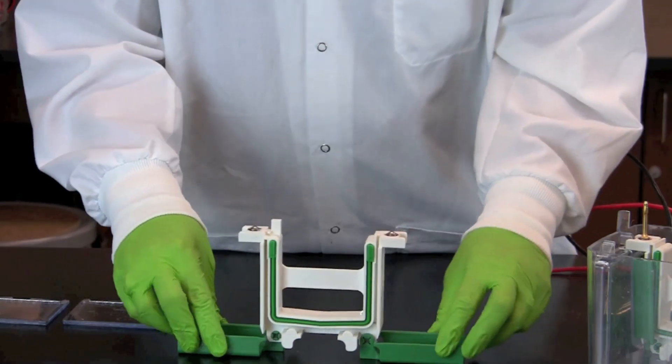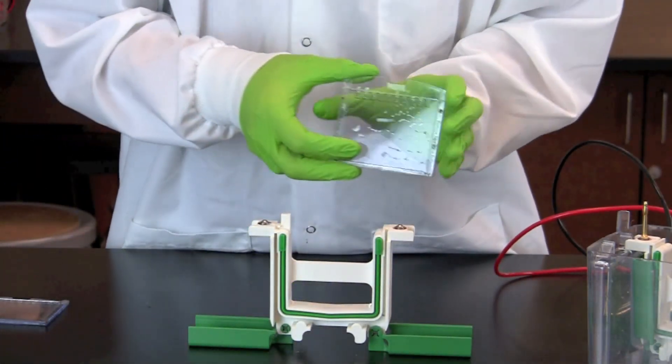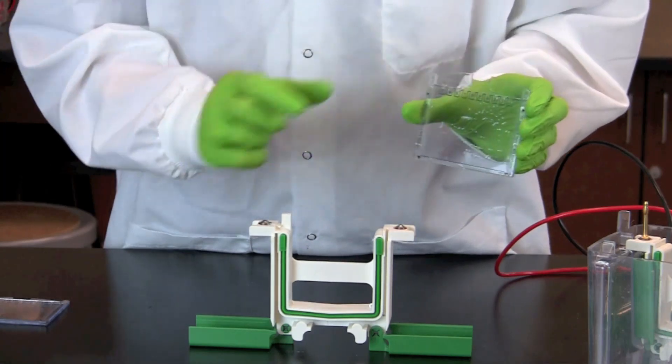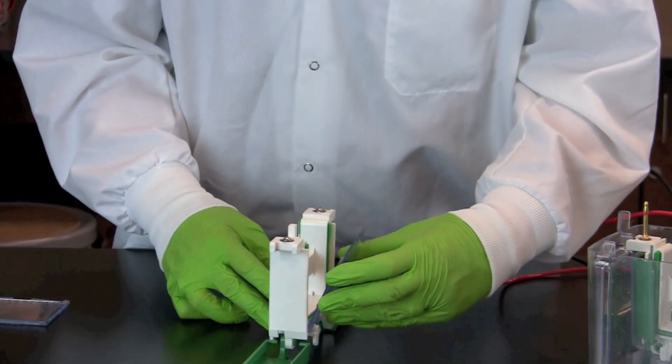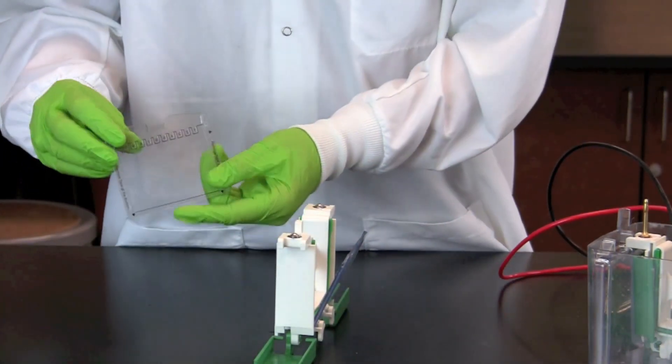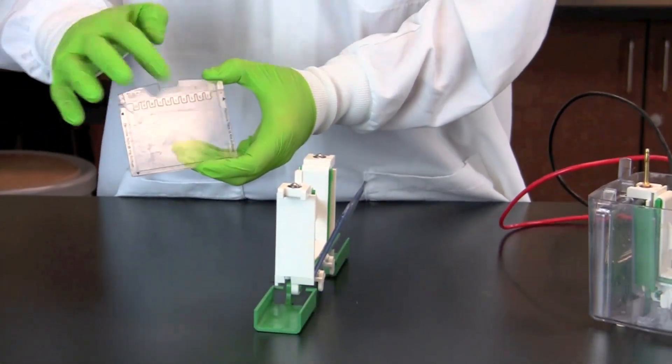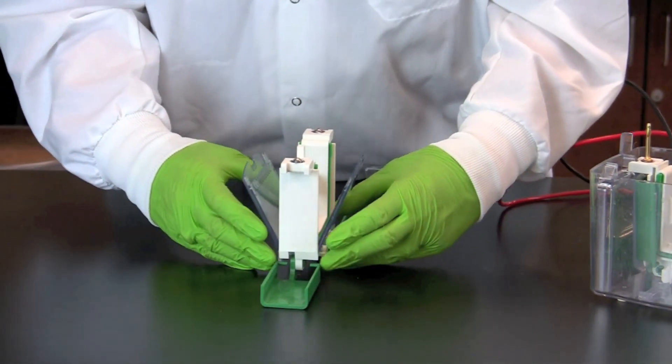Place a gel into the electrode assembly with the short plate facing inward. Place a second gel on the opposite side of the assembly. If only one gel is run, use a buffer dam to replace the second gel.